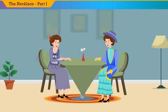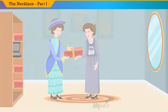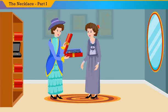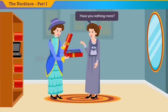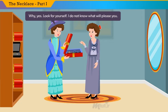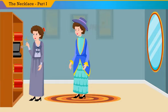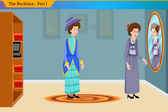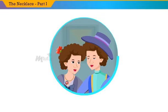The next day she took herself to her friend's house and related her story of distress. Mrs. Forrestier went to her closet and took out a large jewel case. She opened it and said, 'Choose, my dear.' Matilda saw some bracelets, then a collar of pearls, a Venetian cross of gold, and jewels of admirable workmanship. She hesitated, but could neither decide to take them nor leave them. Then she asked, 'Have you nothing more?' Mrs. Forrestier replied, 'Why, yes. Look for yourself. I do not know what will please you.' Suddenly she discovered, in a black satin box, a superb necklace of diamonds. Her hands trembled as she took it out. She placed it above her throat against her dress and was ecstatic. Then she asked in a hesitating voice, full of anxiety, 'Could you lend me this?' Mrs. Forrestier happily said, 'Yes, certainly.' She fell upon the neck of her friend and embraced her with passion.